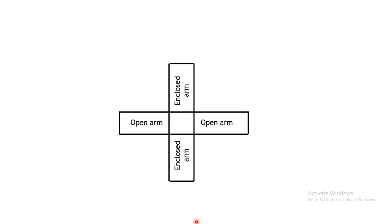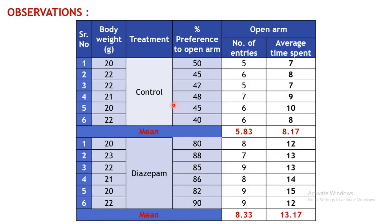This is what your plus maze will look like: two opposite arms will be open and two opposite arms will be enclosed with walls, while the open arms have no walls. Place your animal at the centre facing toward the open arm and check for 5 minutes how much time it spends in each arm — open or enclosed — how many entries it makes in individual arms, and note down the readings.